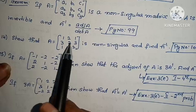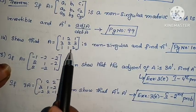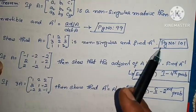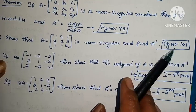Show that A equals to [1, 2, 1; 3, 2, 3; 1, 1, 2] is non-singular, and find A⁻¹. Page number 101.